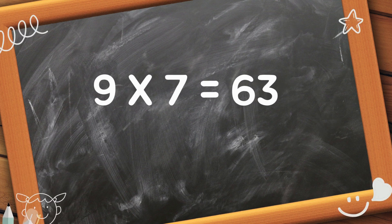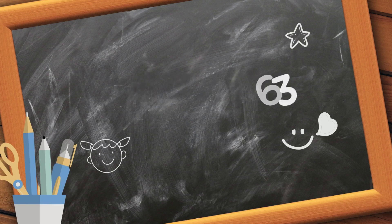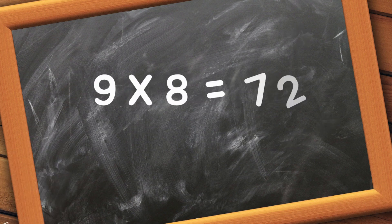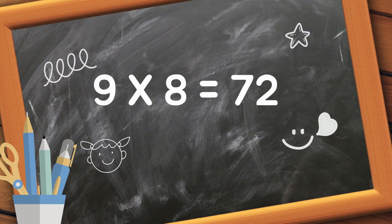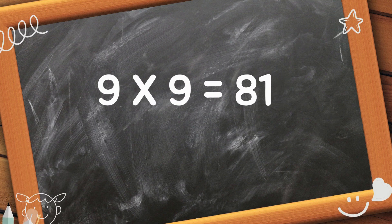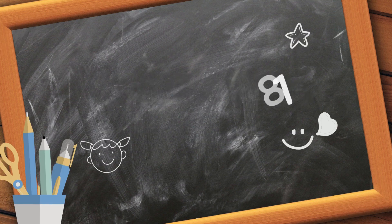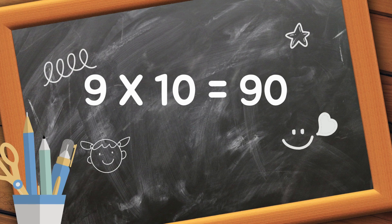9 times 6 is 54. 9 times 7 is 63. 9 times 8 is 72. 9 times 9 is 81. 9 times 10 is 90.